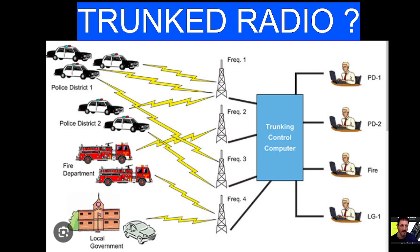I've never really thought about what a trunked radio system is, but it's almost like assigning frequencies to groups of people — a bit like DMR where you've got zones and you can have groups. You can put, say, five talk groups — your favorite five talk groups — into one group, and you'll always hear those five talk groups when your radio is on.